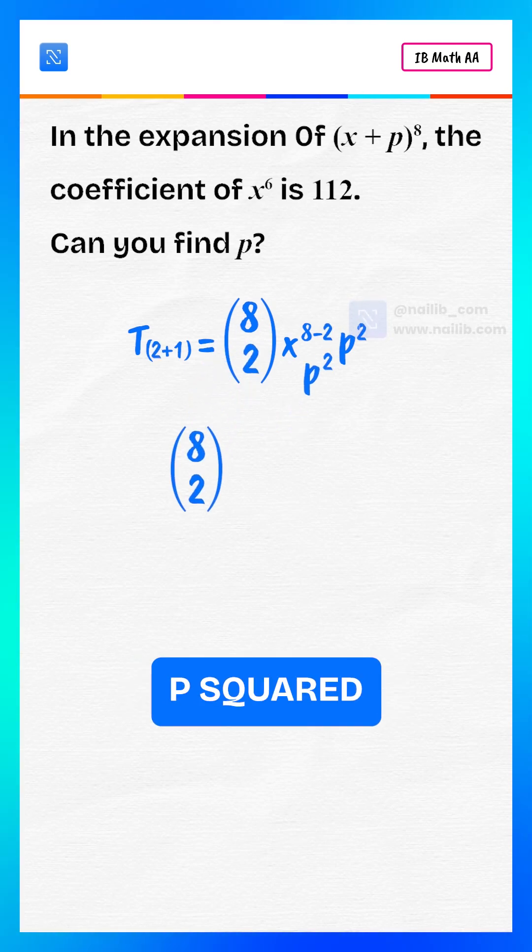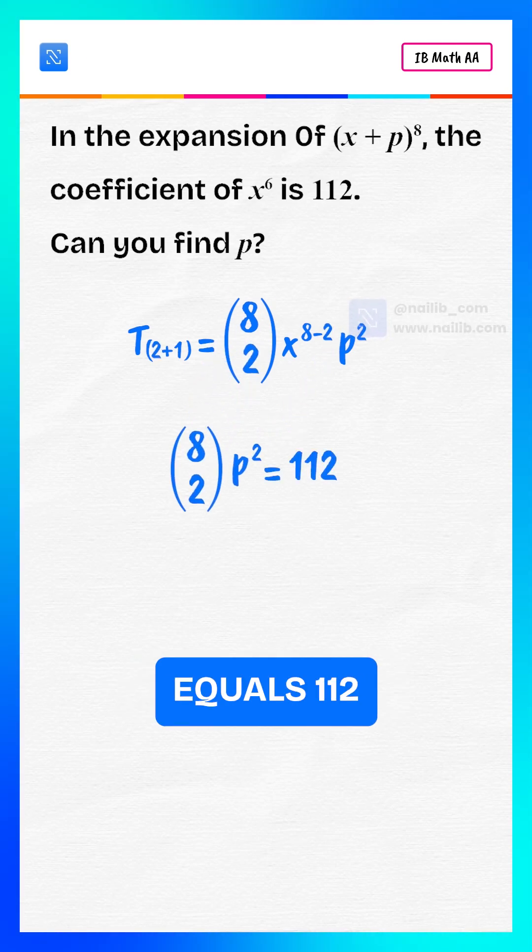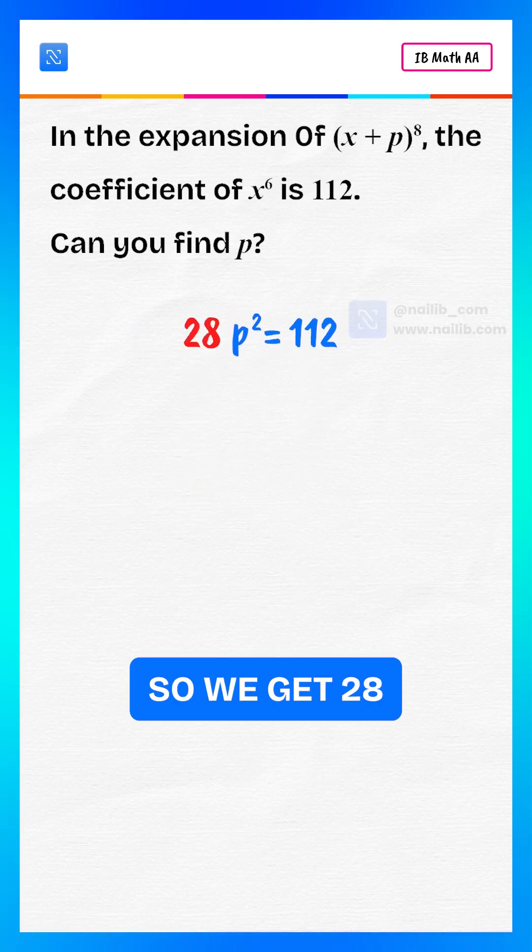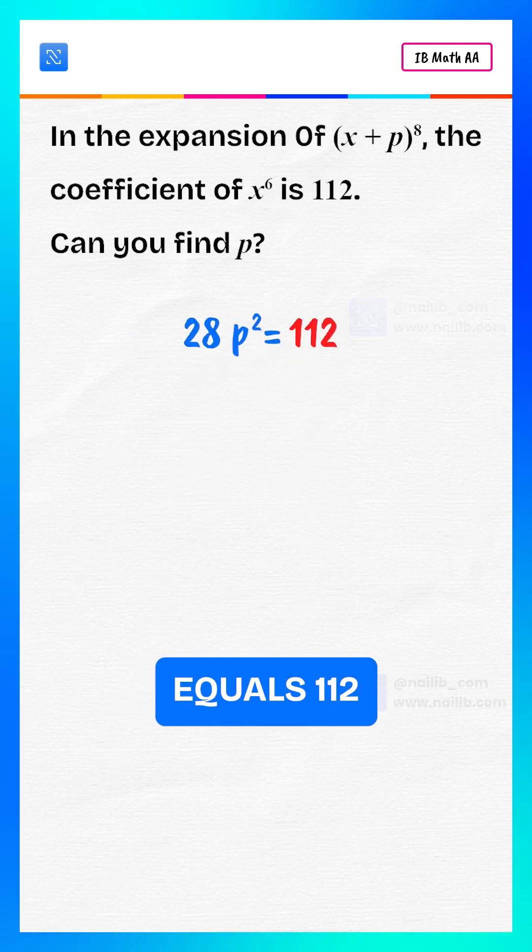8 choose 2 times p squared equals 112. 8 choose 2 is 28, so we get 28p squared equals 112.